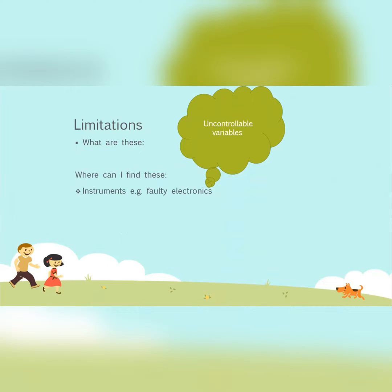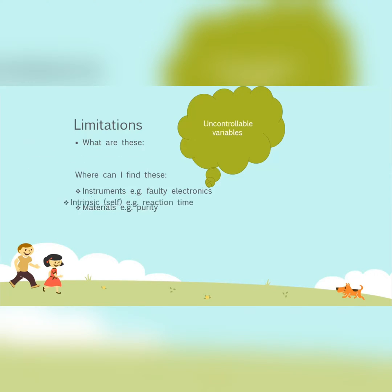You can find limitations in your instruments — you can have faulty electronics in an instrument which you don't know anything about, so because you can't fix the problem it becomes a limitation. In your materials, especially in chemistry, substances have certain purity. When you need high-purity substances for titrations or other reactions, you really can't change the purity, so that becomes a limiting factor.